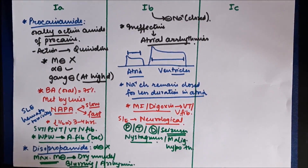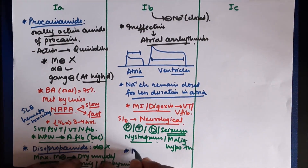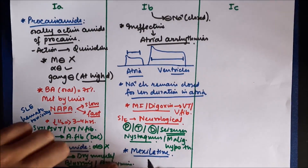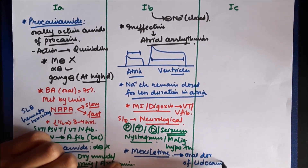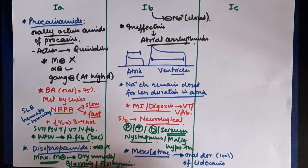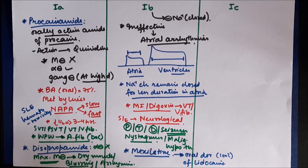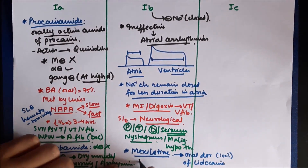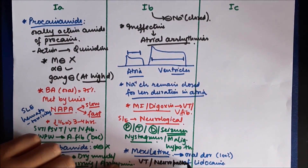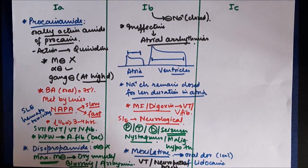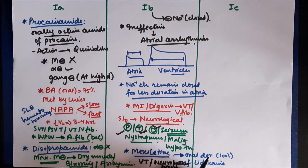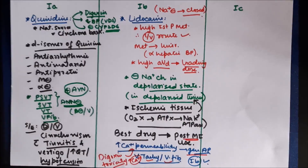Another important Class 1b drug is mexiletine, which is an oral derivative of lidocaine with nearly 100% oral bioavailability. It is used in ventricular arrhythmias such as ventricular tachycardia, and is also used in neuropathic pain — it blocks sodium channels in peripheral nerves to decrease pain in conditions such as diabetic neuropathy. It produces similar neurological side effects to lidocaine, such as paresthesias and tremors.